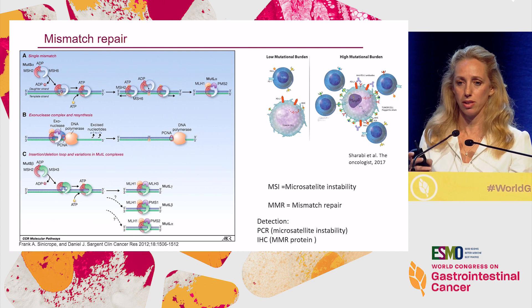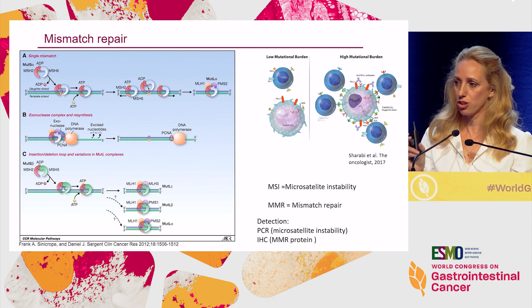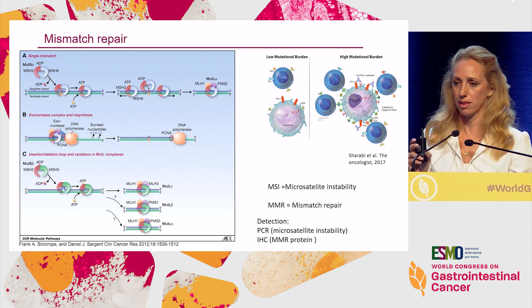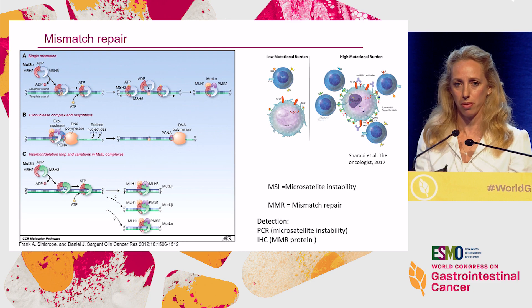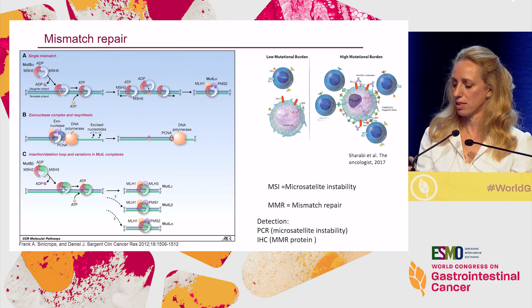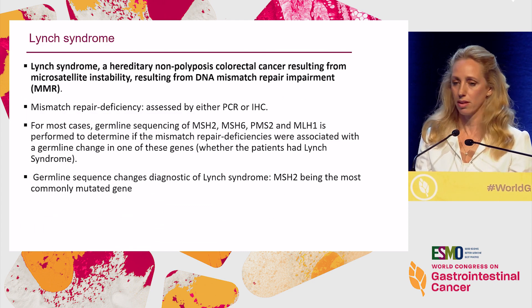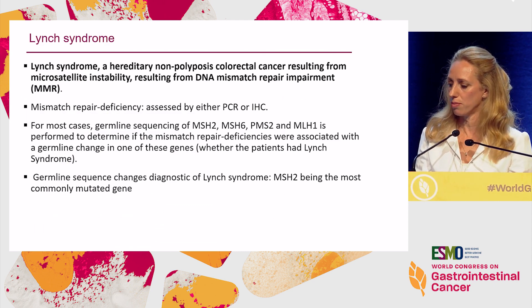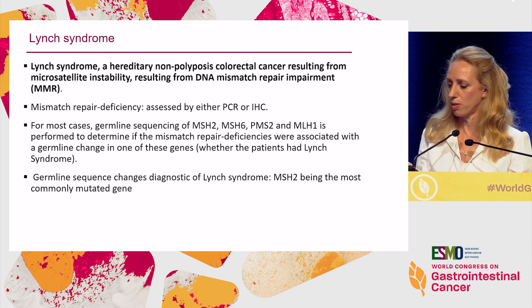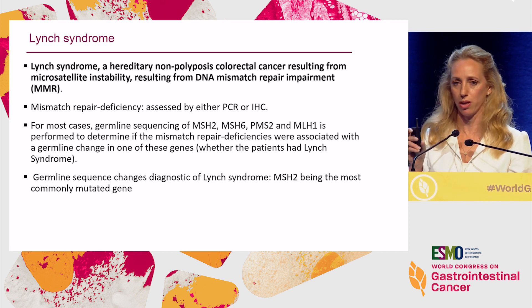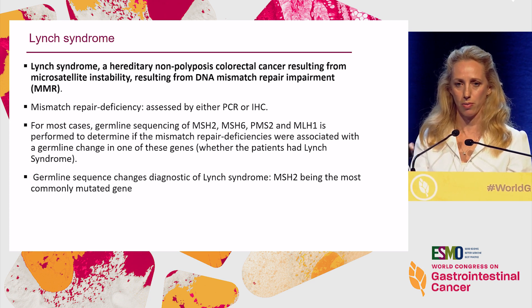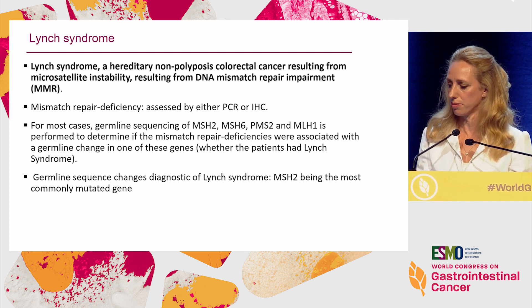Mismatch repair genes are important proteins that spell-check synthesized DNA. If there's a problem in the way mismatch repair proteins work, we get these repeating microsatellite sequences — specifically in Lynch syndrome. Mismatch repair deficiency can be tested by PCR or IHC, and when we want to differentiate whether it's a somatic event only or a germline event, we have to test for the germline as well.